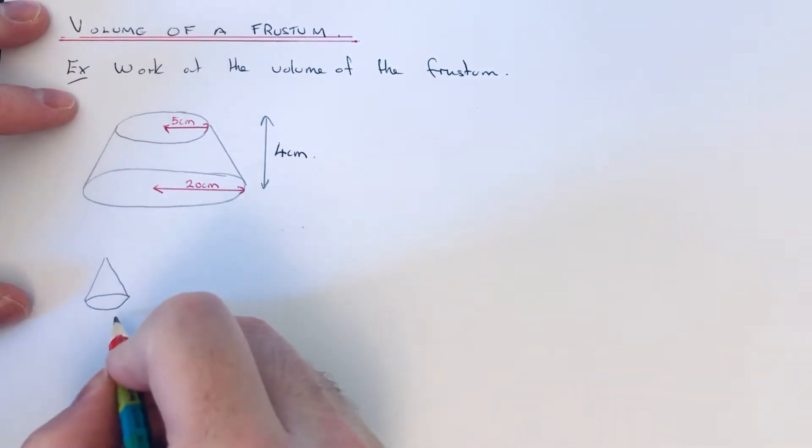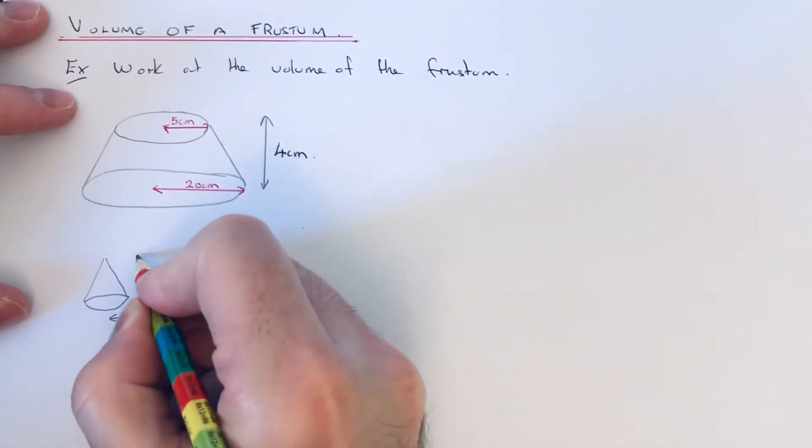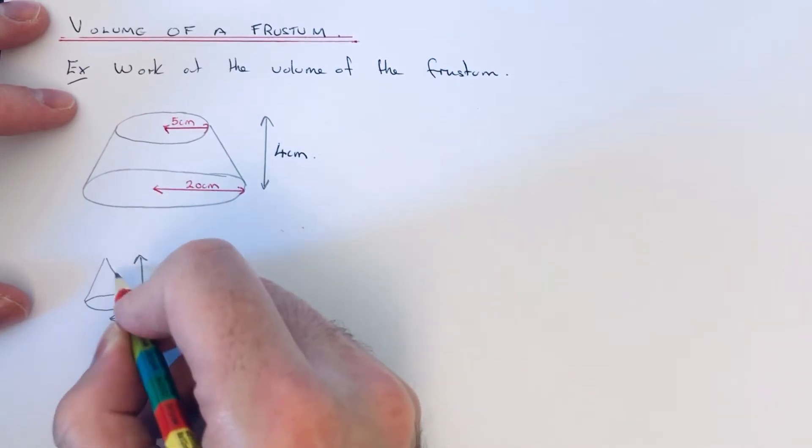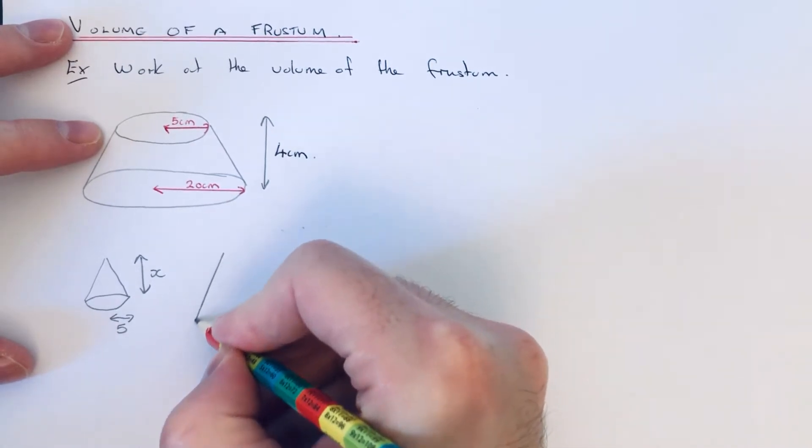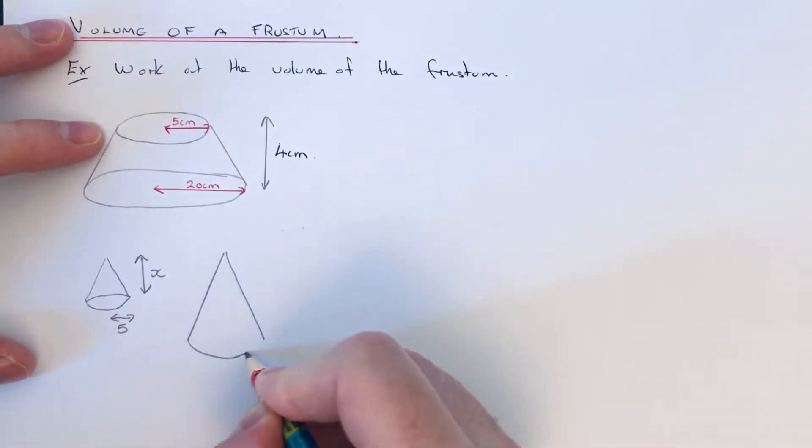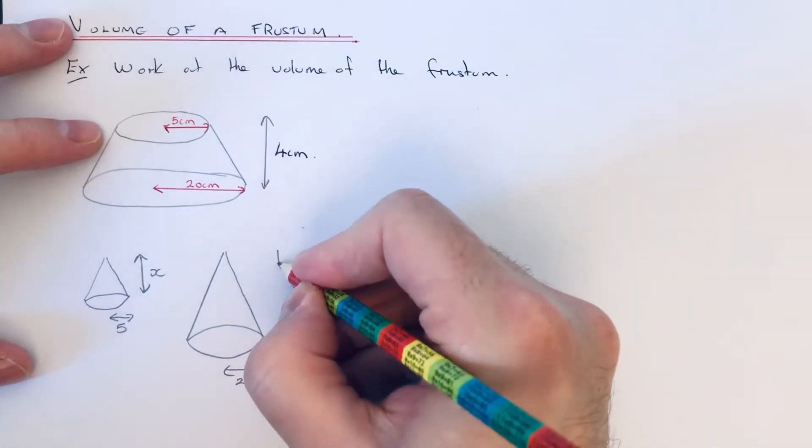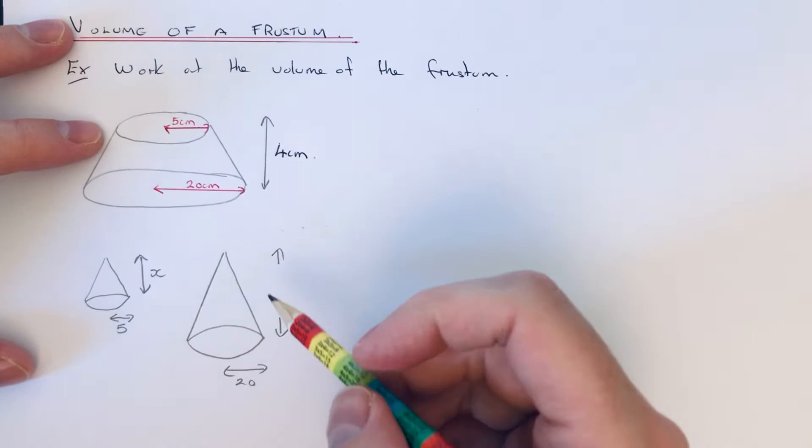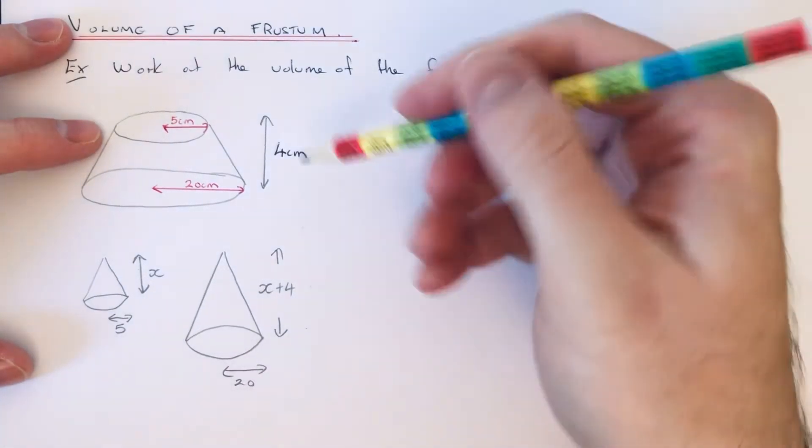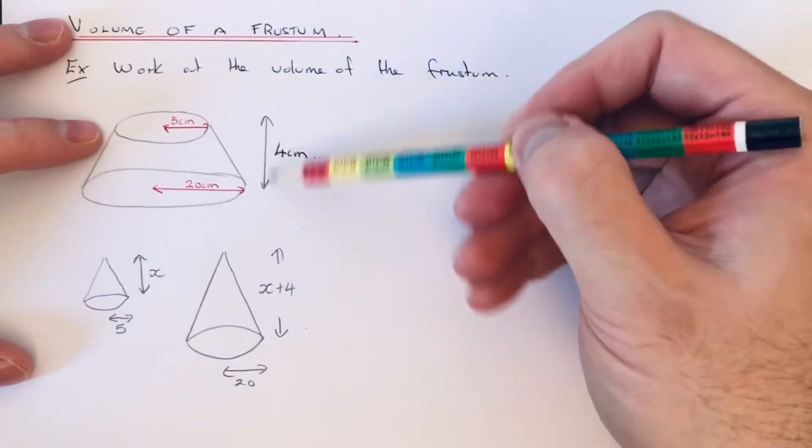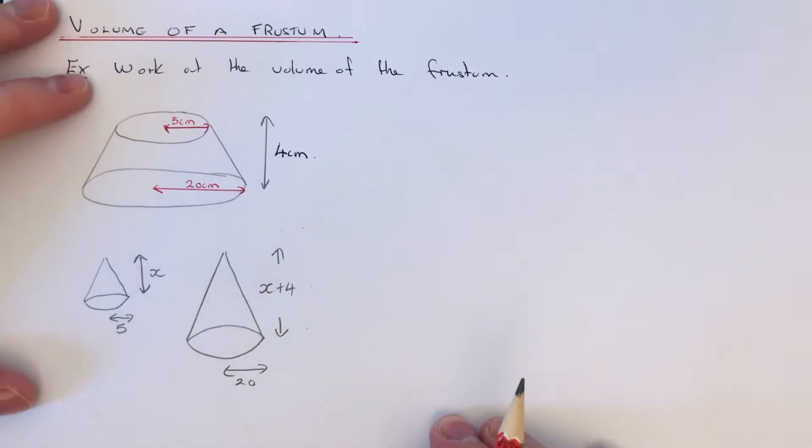Here's the small cone. The small cone would have a radius of 5 and we don't know the height of the small cone, so let's just call that X. And then a large cone has a radius of 20 and the height of it would be X plus 4, because it's just that extra 4 onto that X there.